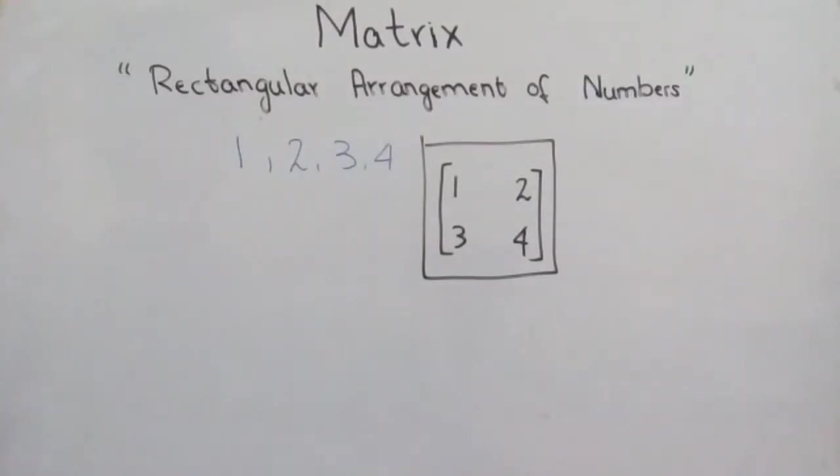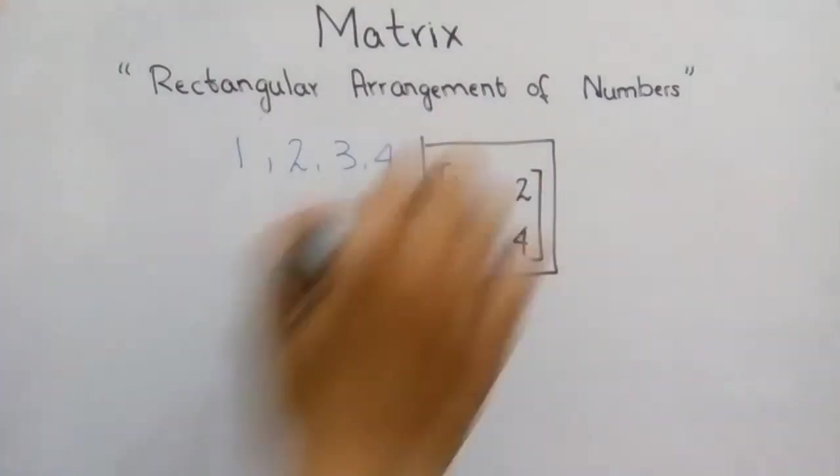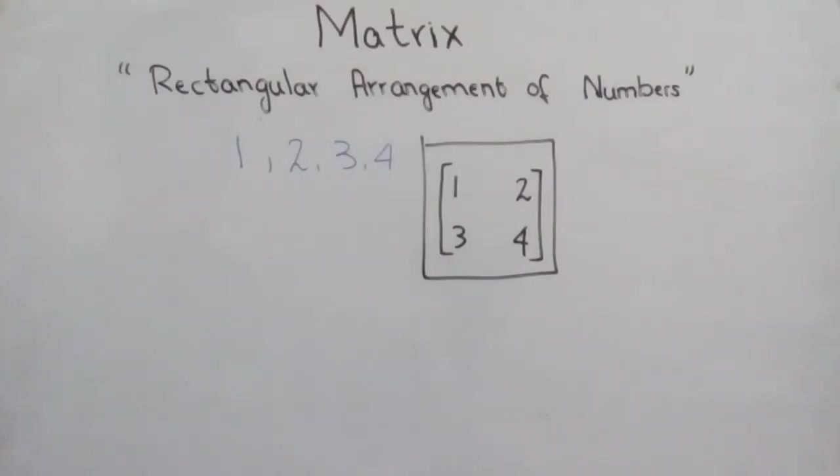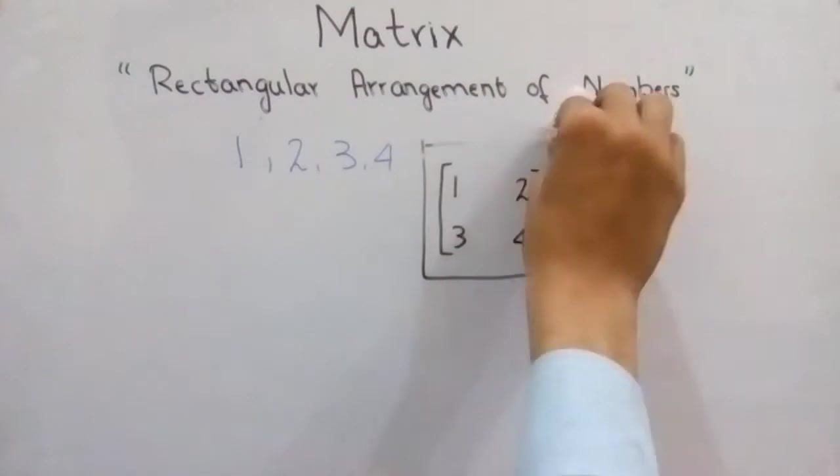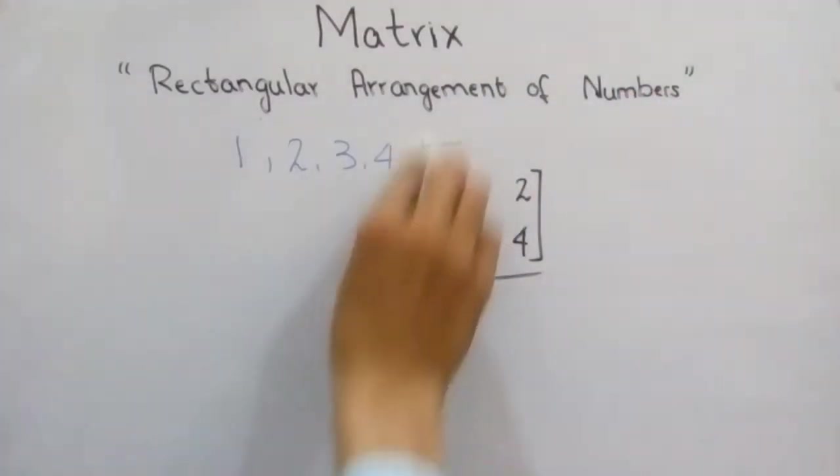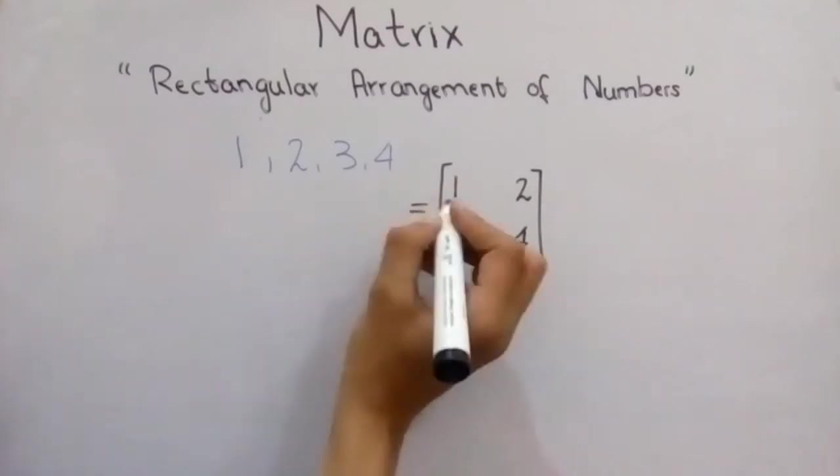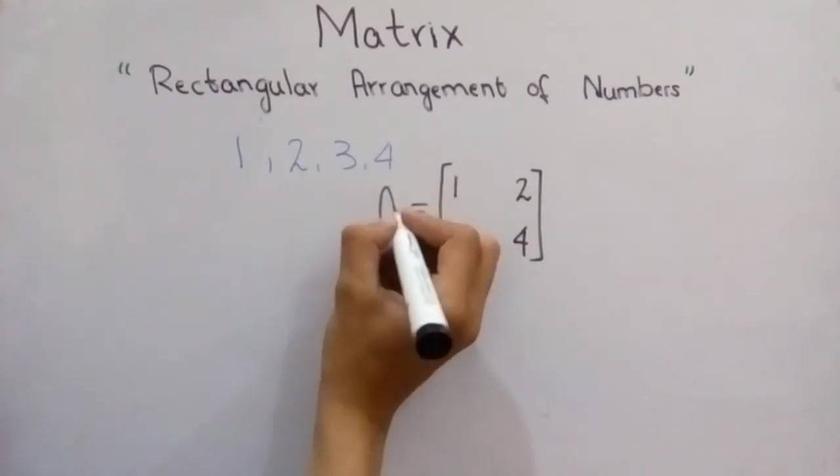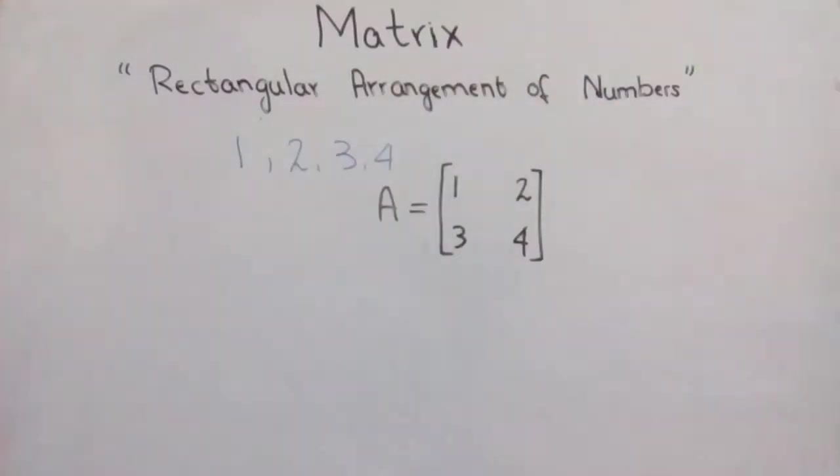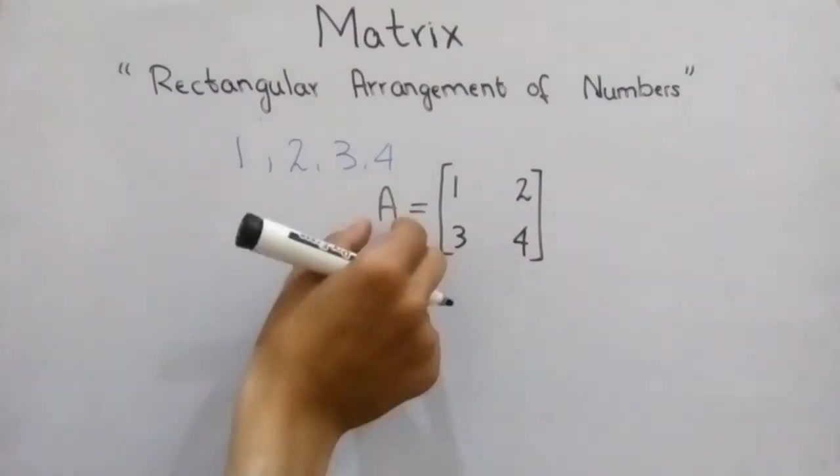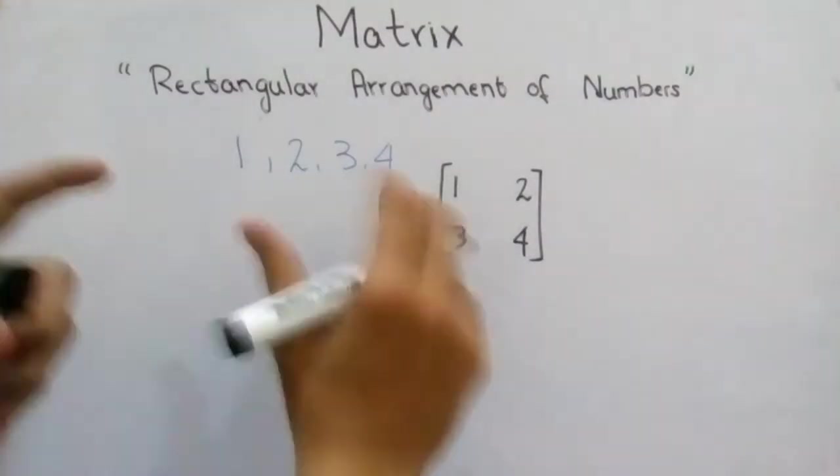When we enclose these numbers by brackets, we can now say we have a matrix. But we don't know what this matrix is, what is its name. So for naming it, we will write A equals the matrix. The matrix is that, and A is the name.